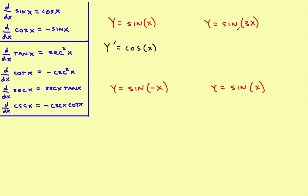Look at this next example. What you've got here is 3x inside of the sine function. So the outer function is sine of x, the inner function is 3x. The chain rule says: take the derivative of the outer part, rewrite the inner part, then times the derivative of the inner part. The derivative of the sine is the cosine, then rewrite the original inner function, which is 3x, then times the derivative of what's on the inside, which is 3.